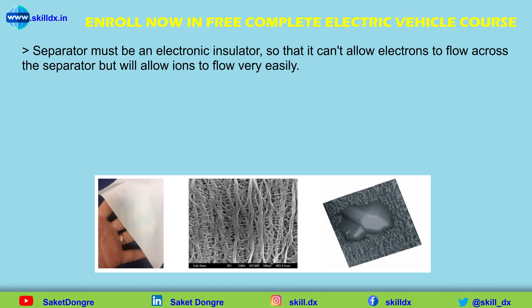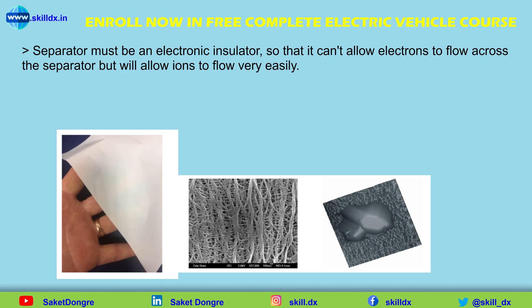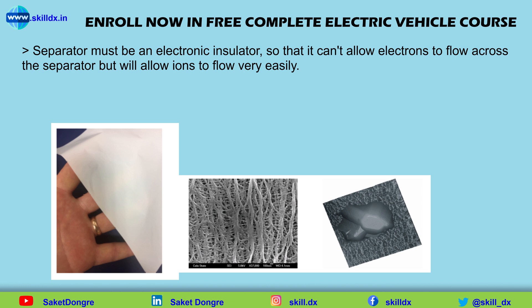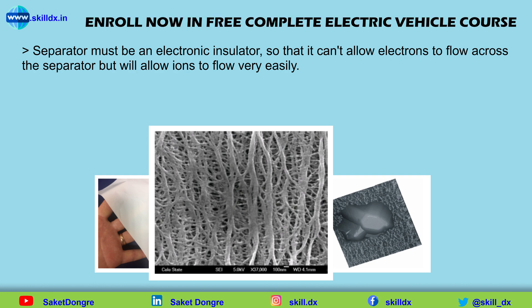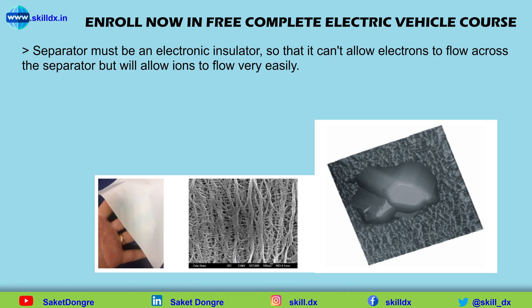The image shows a separator material used in some lithium-ion battery cells. To the unaided eye it looks like a thin sheet of white plastic — so thin you can see fingers through it. But under magnification, tiny pores between the fibers of the material become visible. A scanning electron microscope image shows a single particle of lithium manganese oxide on top of a separator, illustrating relative scale: the pores are much, much smaller than the particle size, so electrode particles on either side cannot contact each other.